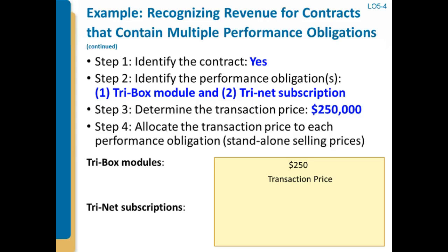These standalone selling prices might be observable — we might sell them separately, as TrueTech does — but they might not be, in which case we're in the position of estimating them. We have two different performance obligations here: delivering tri-boxes and delivering the subscriptions, so we'll allocate based on their standalone selling prices.